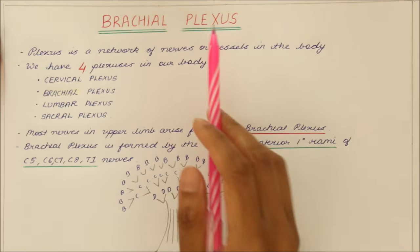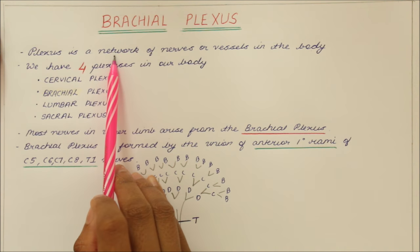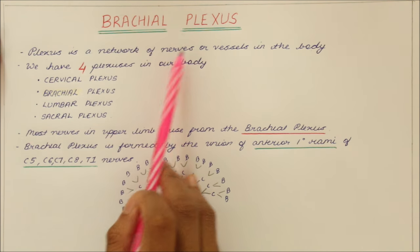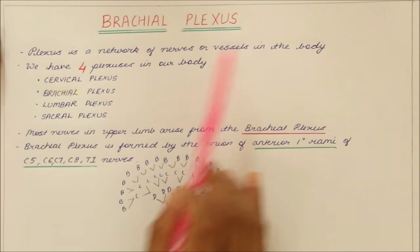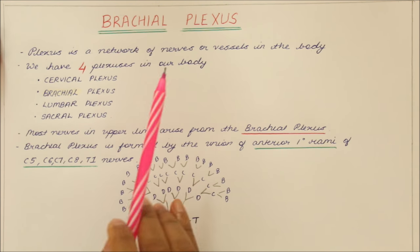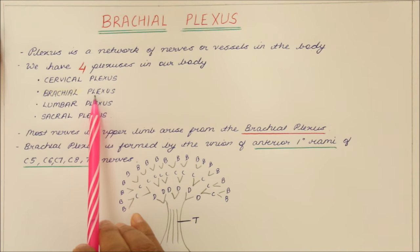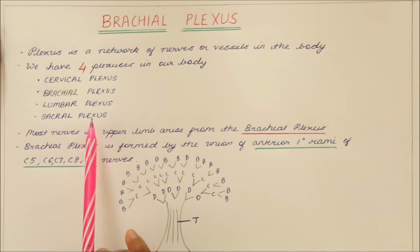Hello everyone and welcome to my channel. In this video we will be learning about the brachial plexus. A plexus is a network of nerves or vessels in the body. We have four plexuses in our body: mainly the cervical plexus, brachial plexus, lumbar plexus and the sacral plexus.